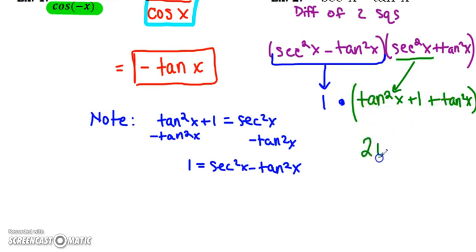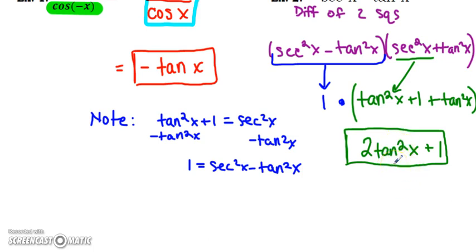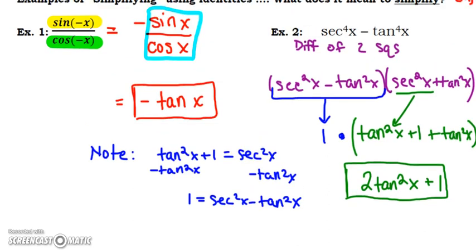I also substituted the original Pythagorean identity — secant squared is tangent squared x plus one — so now I just have tangents to deal with. I have two tangent squared x plus one. That is about as simplified as we can make this: we've got one trig function and reduced the exponents. That is the simplified version of secant to the fourth of x minus tangent to the fourth of x.